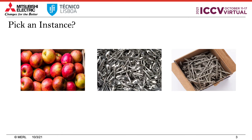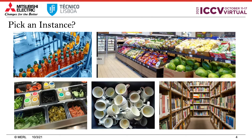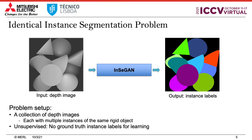Such an instance segmentation problem appears in several situations, such as picking an apple or a screw from a box, and one can see instances of this problem almost everywhere in daily life. In this paper, we propose an approach for unsupervised instance segmentation that takes as input a depth image consisting of multiple instances of an object, and the goal is to produce instance segmentation masks for each instance. We assume access to a collection of depth images; the object is assumed rigid but can have varied poses and may be occluded.